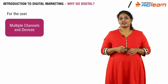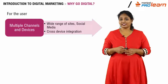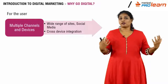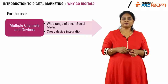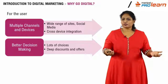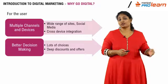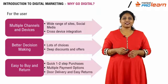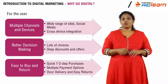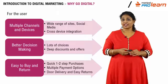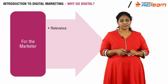Why are 3 billion people online? What is it about digital media that attracts everyone? For a user, digital media offers multiple channels and devices to do what they want to do. They have a wide range of sites and social media to connect with and maintain relationships. There's cross-device integration — you can start on a desktop, go to mobile, and end on your tablet. There's also better decision-making with a huge range of choices, and easy buying and returns with home delivery and pickup, plus wallets and payment gateways making online purchases easier than ever.